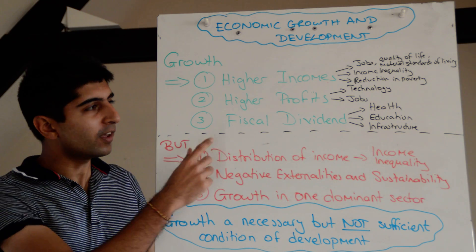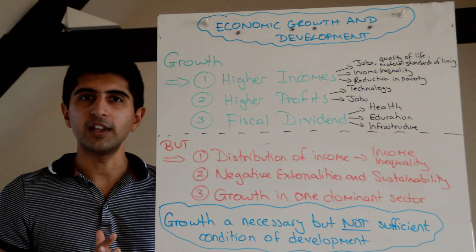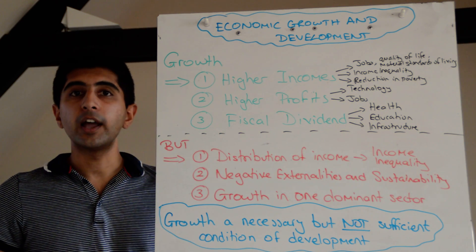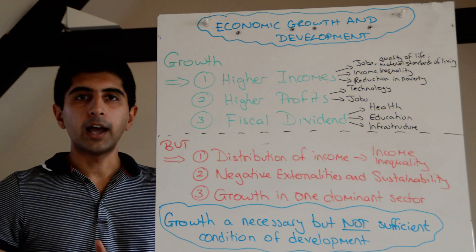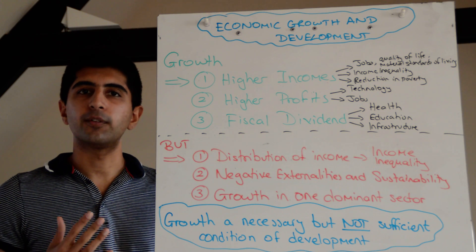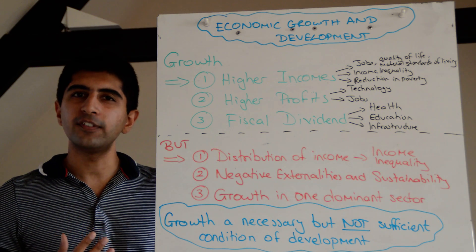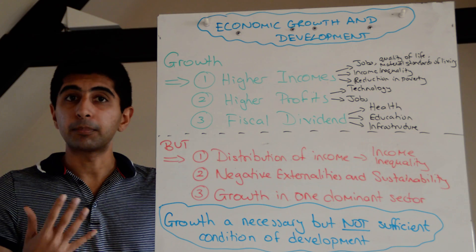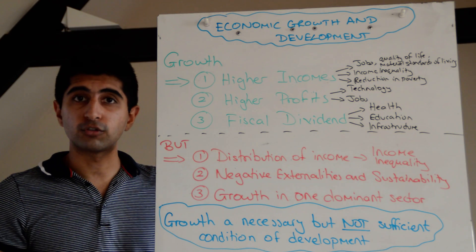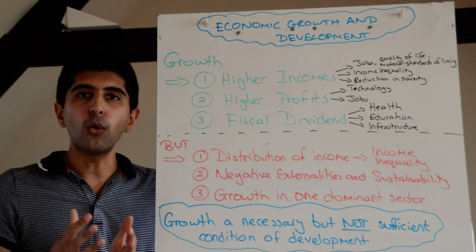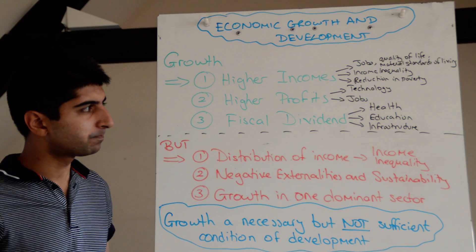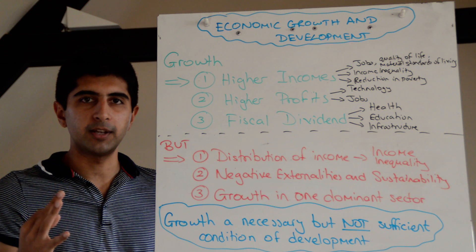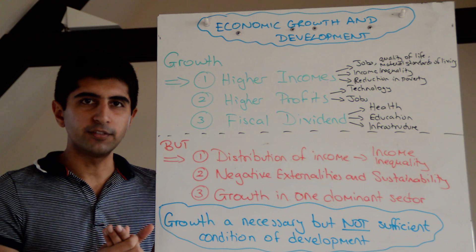Growth can also produce what we call a fiscal dividend. If there is growth in the economy, we can presume there will be higher income tax collection, higher corporation tax collection, and increased revenue from expenditure taxes like VAT — creating higher fiscal revenues for the government. If the government is efficient and their motives are pure, they're going to spend this money on areas that promote development, such as healthcare, education, and infrastructure like roads, bridges, sanitation, and telecommunications. Health, education, and infrastructure are all massive drivers of development.